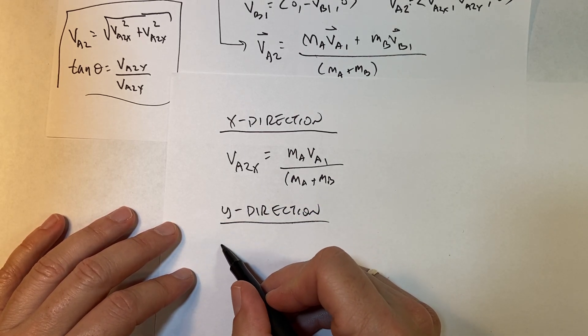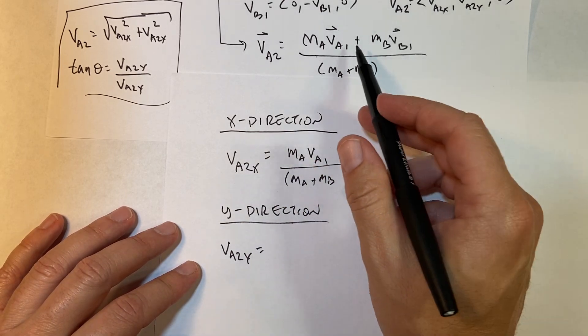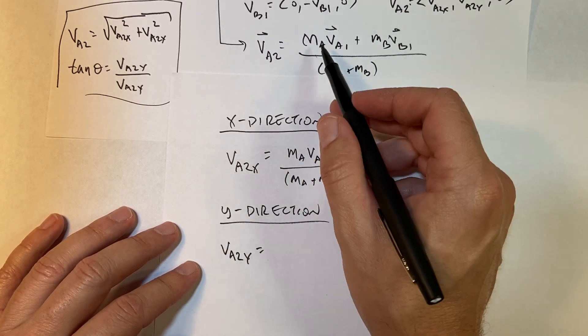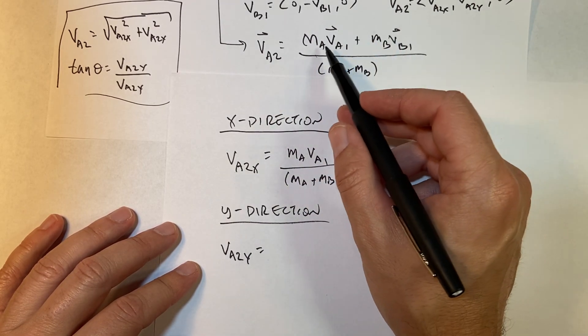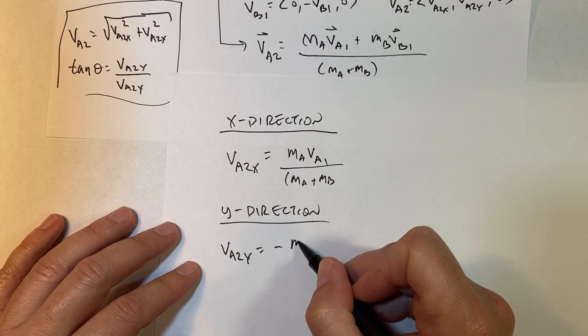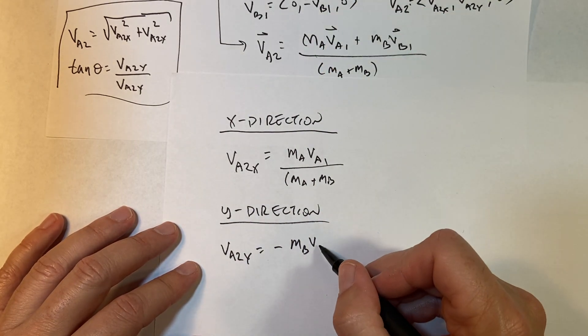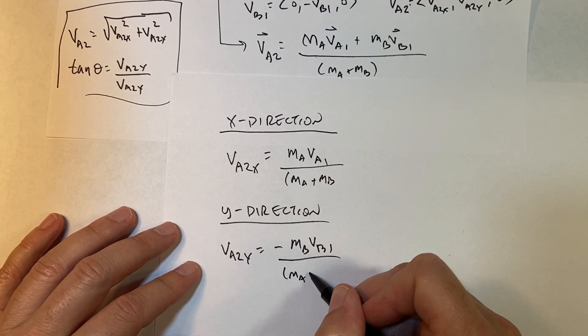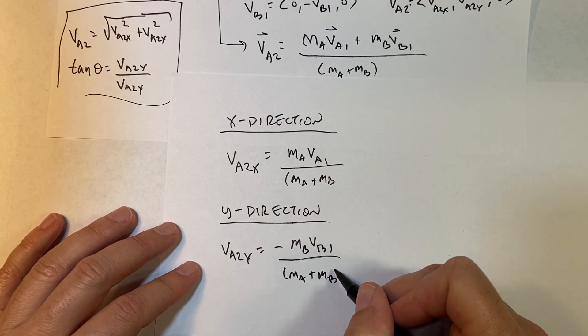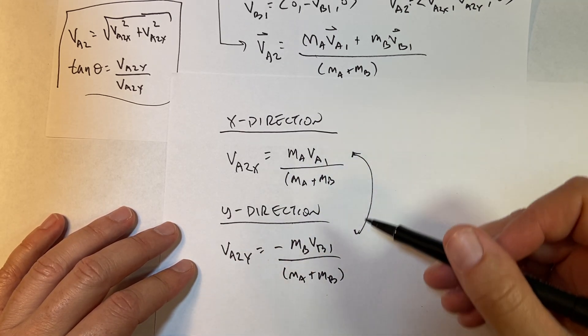Now what about in the y-direction? I have v_A2y. It's going to be equal to—I'm doing the same equation up here now. v_A1y is zero, so that's zero. And then I have minus m_B v_B1 over (m_A + m_B). So I get the same thing, but it's breaking into two pieces.